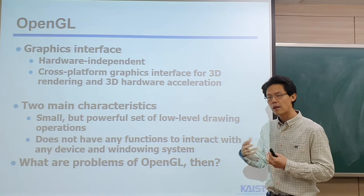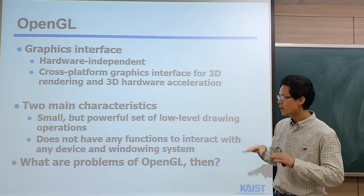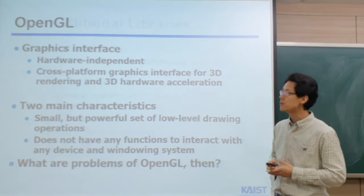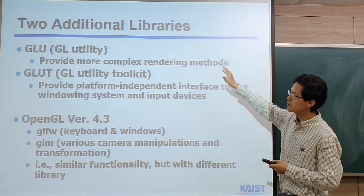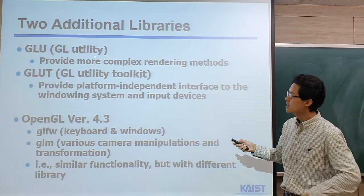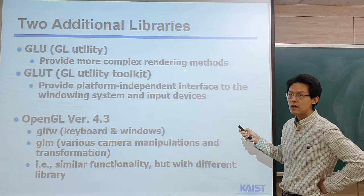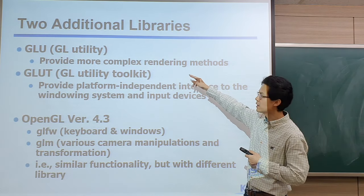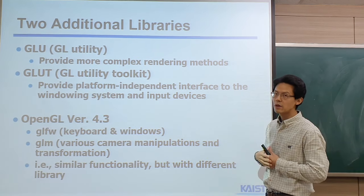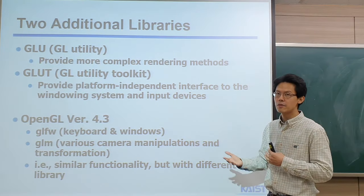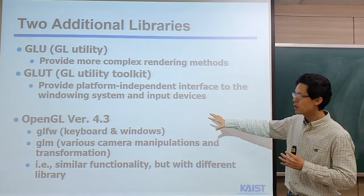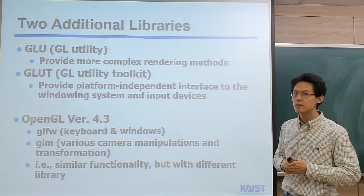Also, if you want to develop a Windows-based OpenGL application, you need some other library to allow programming under the Windows OS. In this class, we will mainly use two classical ones: GLU — the GL Utility Library — and GLUT, the GL Utility Toolkit. GLU provides more complex rendering methods, with APIs starting with 'GLU'. There are also more advanced and recent libraries like GLFW, GLM, and so on, providing similar but wider sets of functions. The main idea is similar to these classical ones.